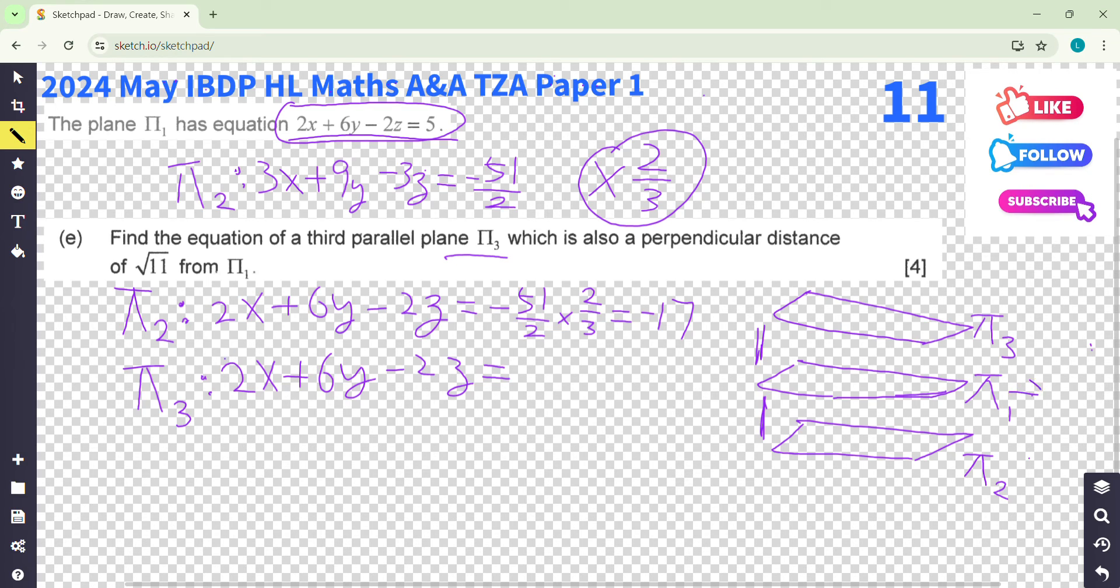So for π_1 is 5. For π_2 is negative 17. So from here to here, different is 22, right? Add 22 up, right?